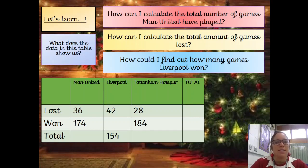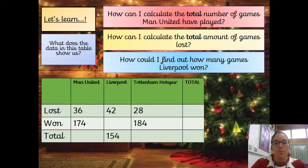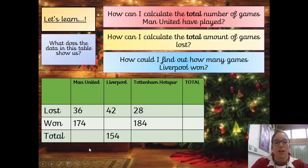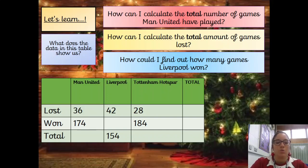What does the data in this table show us? At the top we've got football teams: Man United, Liverpool, and Tottenham Hotspur — which is my team! Down the side we've got Lost, Won, and Total, so it's telling us the stats of the games they've played. How can I calculate the total number of games Man United have played? We need to calculate this information — add the games they've won and the games they've lost together, and that will give you a total answer.